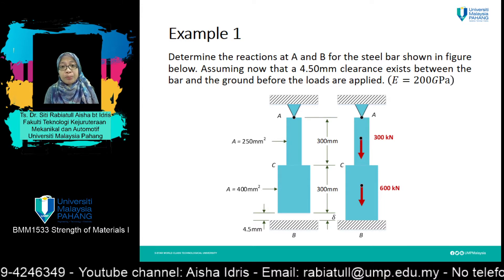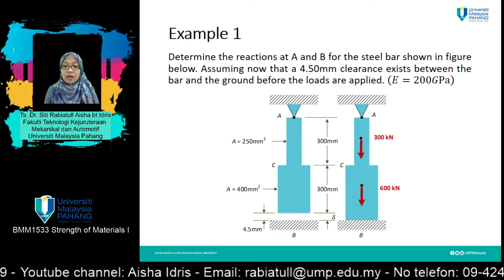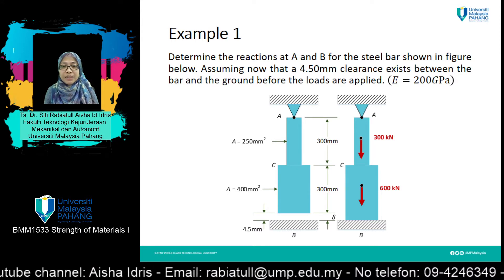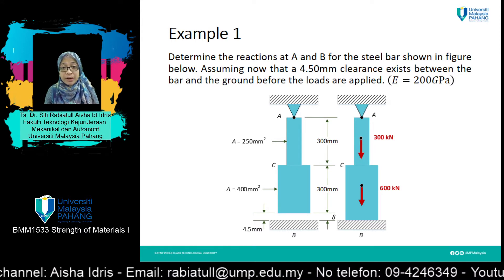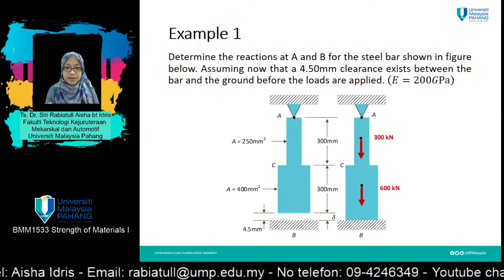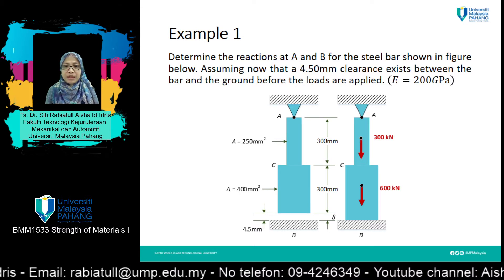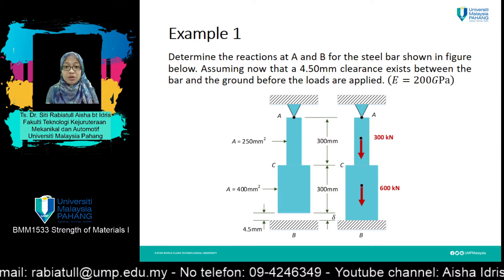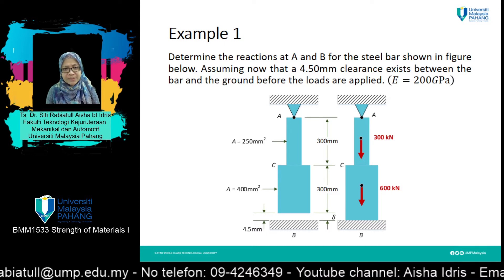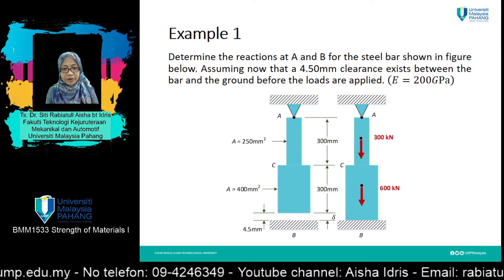In our previous lecture you've seen the example of a statically indeterminate structure, but there was no clearance. For this question, there is a clearance. So the total delta is not equal to zero anymore for this case — it has a value equal to 4.5 mm.